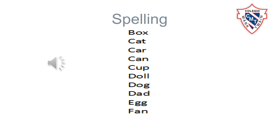Now we are going to review the spelling words. Pay attention. Box, B-O-X, box. Cat, C-A-T, cat. Car, C-A-R, car. Can, C-A-N, can. Cup, C-U-P, cup. Doll, D-O-L-L, doll. Dog, D-O-G, dog. Dad, D-A-D, dad. Egg, E-G-G, egg. Fan, F-A-N, fan.